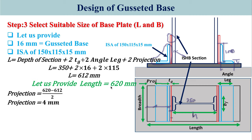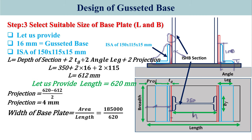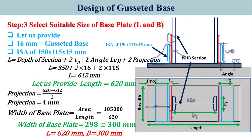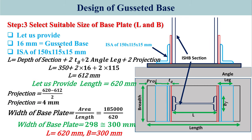Together we are going to have a length of 620 mm. If you know the length and the total area you can easily calculate the width of the base plate. Area divided by length gives approximately 290 mm, so providing 300 mm. Therefore the base plate dimensions are: length 620 mm and breadth 300 mm.